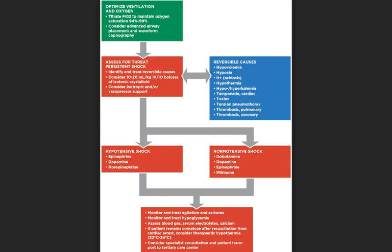For hypotensive shock, you can use epinephrine, dopamine, or norepinephrine. Monitor and treat agitation and seizures, and monitor and treat hypoglycemia. Assess blood gas, serum electrolytes, and calcium. If the patient remains comatose after resuscitation from cardiac arrest, consider therapeutic hypothermia. Consider specialist consultation and patient transport to a tertiary care center.